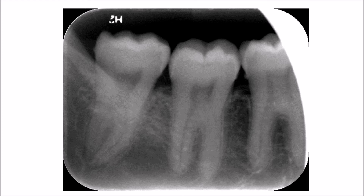Another radiograph that shows different calculus depositions is a periapical radiograph, which also plays a part in detecting calculus in the oral cavity, especially in initial stages. They can also be detected by passing a probe along the mesial and distal surfaces of the teeth below the contact points. In this periapical radiograph, you can see calculus deposits showing the typical triangular projection on the distal surface of the third molar, the mesial surface of the second molar, and the distal surface of the first molar.